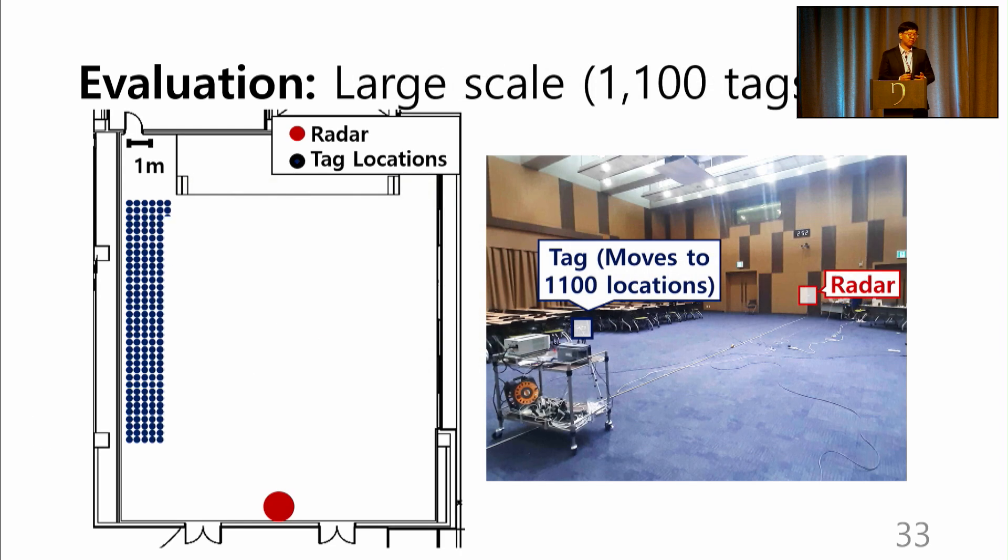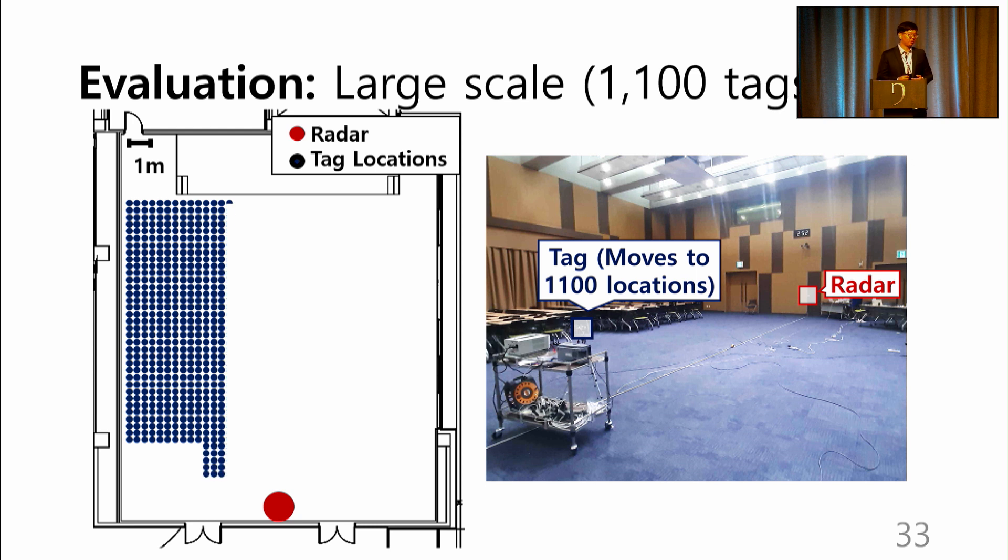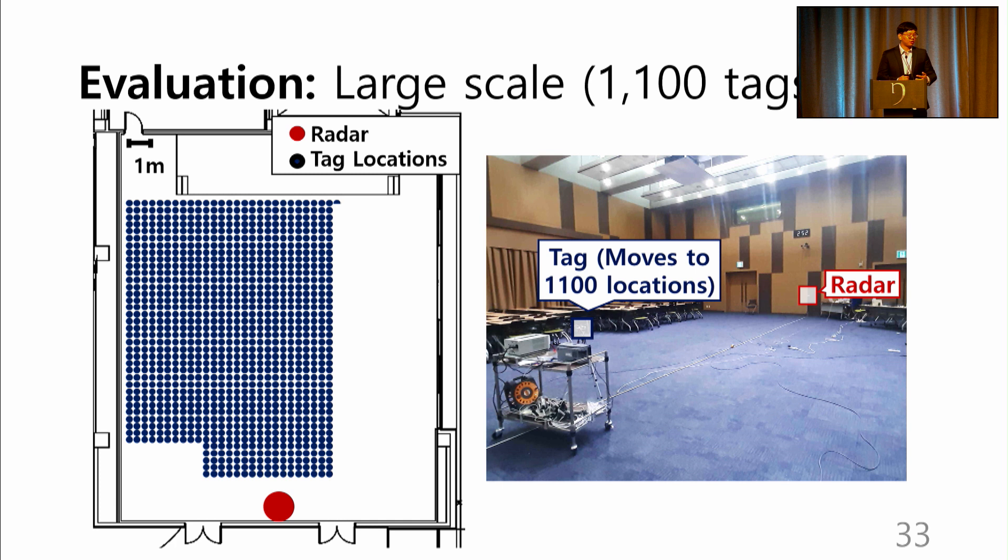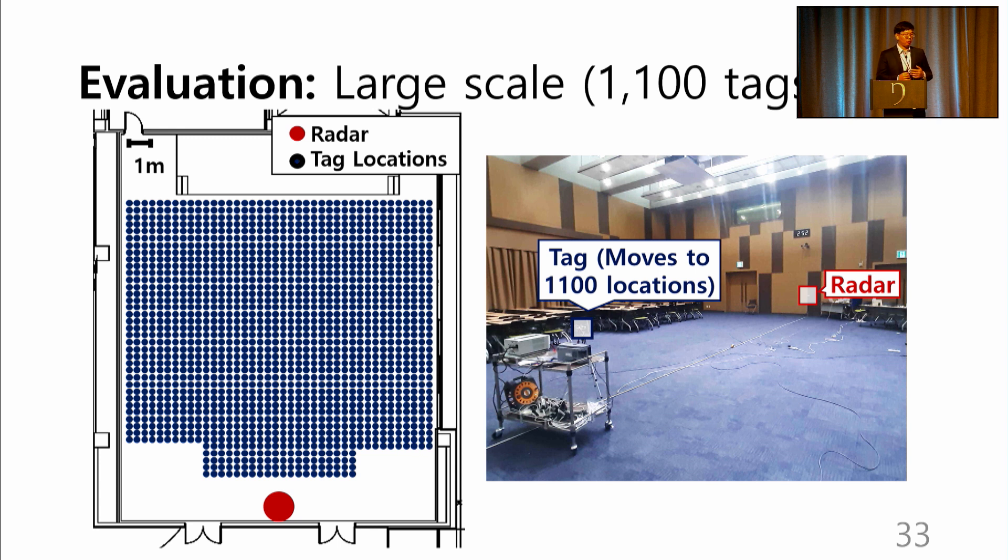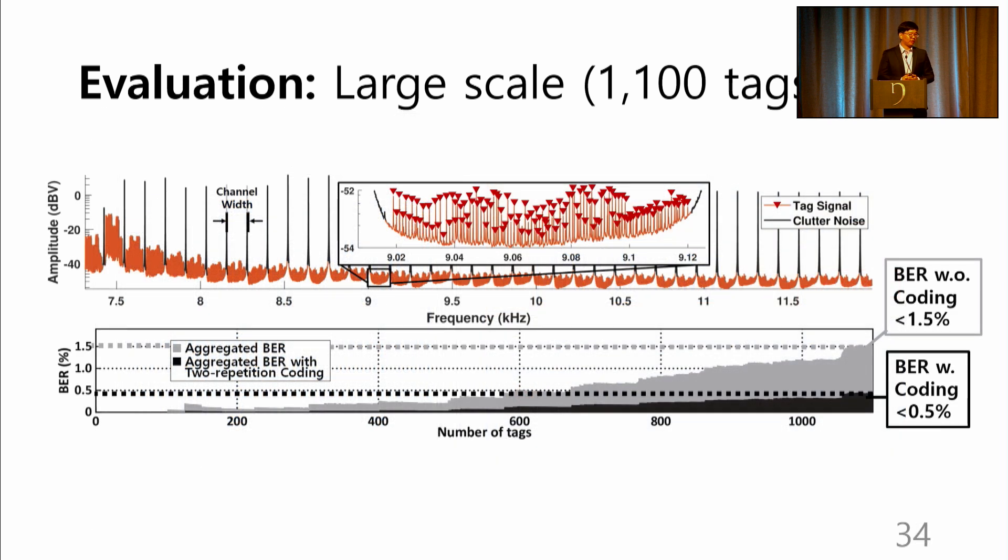To verify the scalability of Omniscatter, a large-scale trace-driven evaluation emulating 1,100 concurrent tag transmissions was conducted. Measurement was made at a large hall where the tag was moved to all 1,100 positions for measurement. The measurements were summed up to emulate concurrent transmission. The figure at the top shows the successful demodulation of concurrent 1,100 tags. Each tag signal is visible with a red peak. The BER is kept below 1.5 percent with the 1,100 tags, where a simple two-repetition coding can reduce the BER to less than 0.5 percent. Altogether, the result proves the support of massive connectivity at Omniscatter.